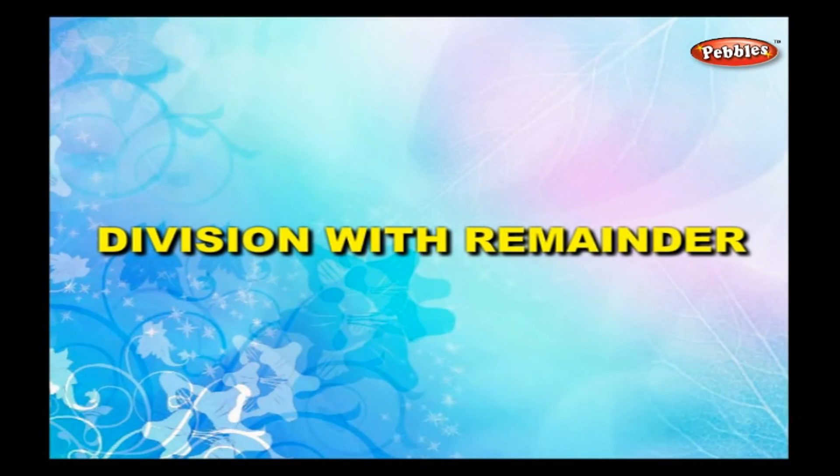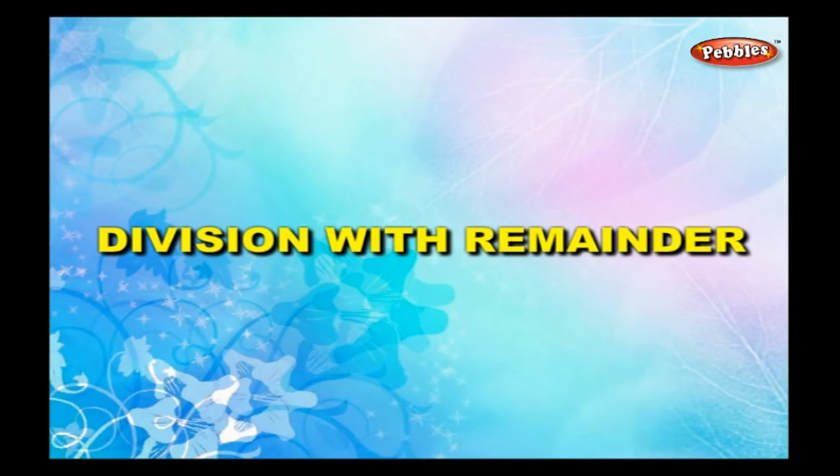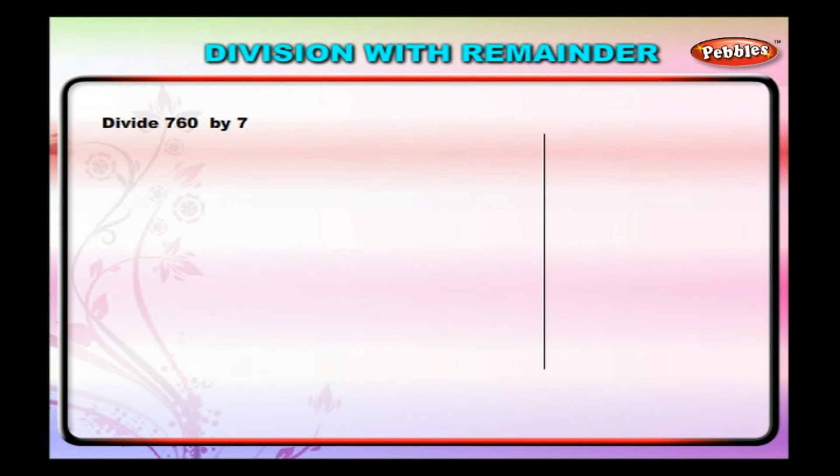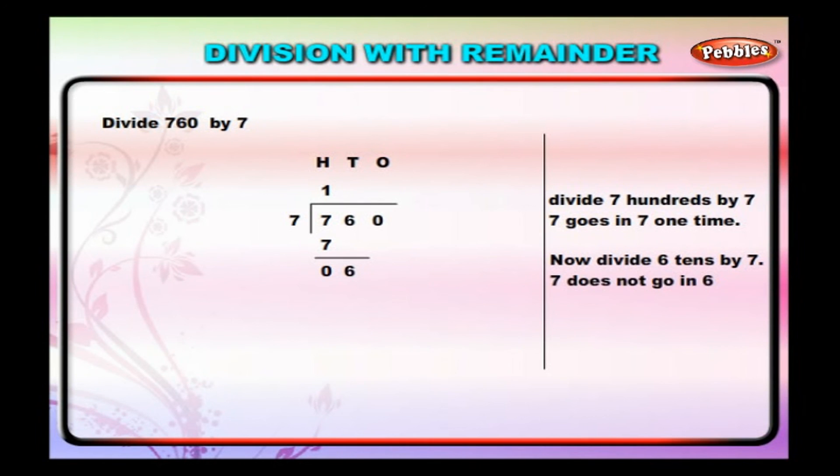Division with remainder. Divide 760 by 7. First, arrange the numbers. Step 2: Divide 7 hundredths by 7. 7 goes into 7 one time. Write 1 in the hundreds place of quotient and 7 below 7. Now divide 6 tens by 7. 7 does not go into 6.